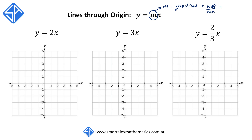The gradient is a measure of the slope of the line, and we define it as rise divided by run — in other words, the change in vertical distance Δy divided by the change in horizontal distance Δx. So if m is greater than 0, the line will be sloping towards the right, and if m is less than 0, the line will be sloping towards the left.